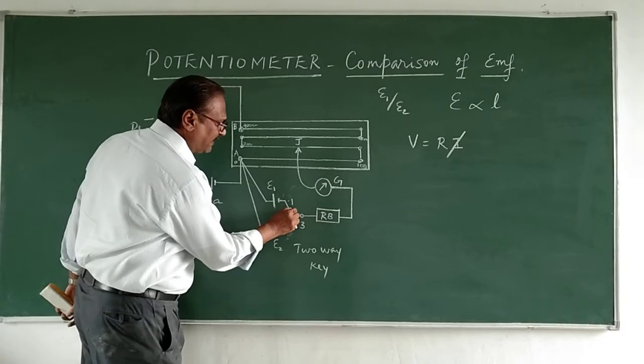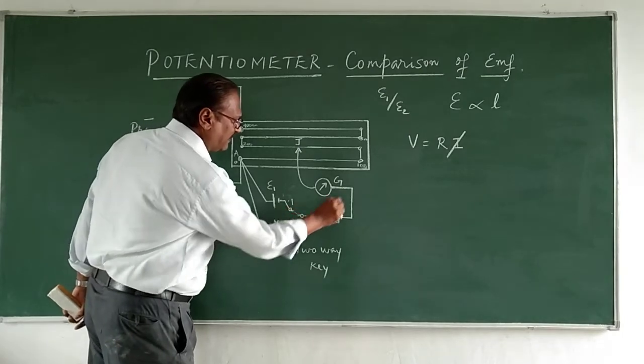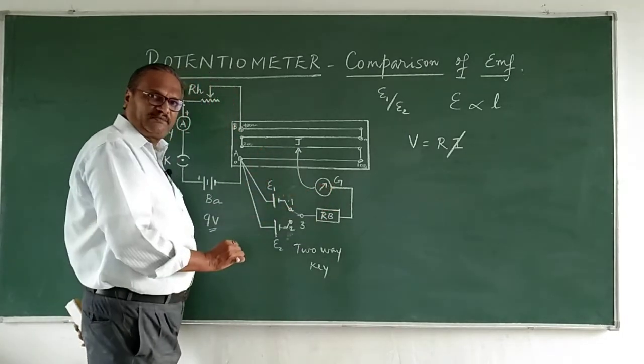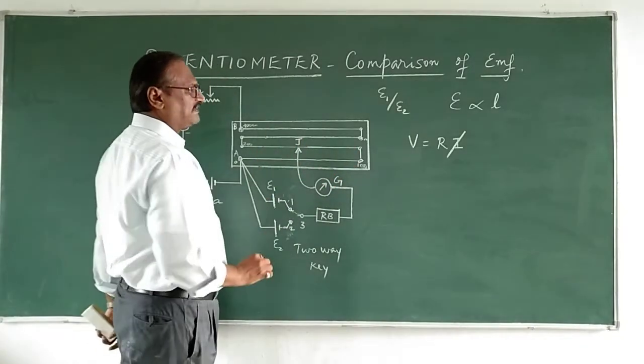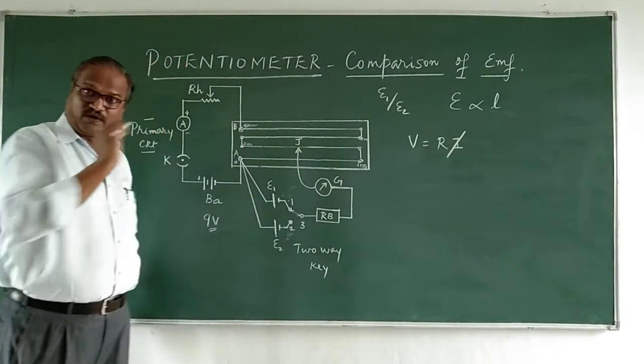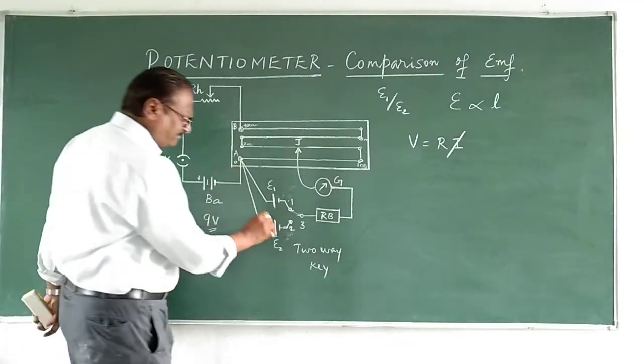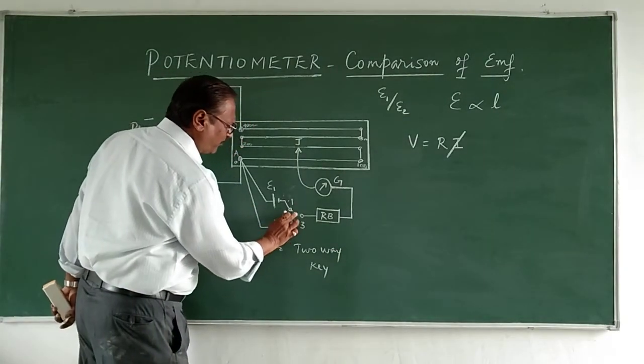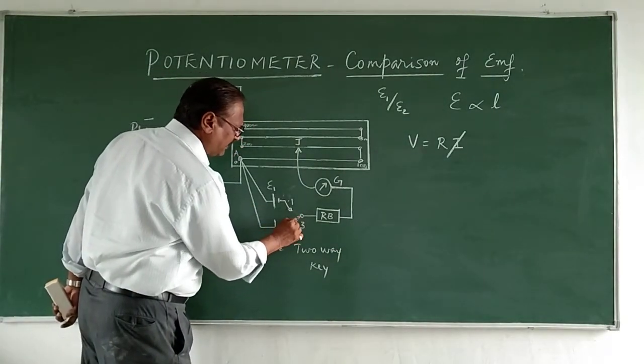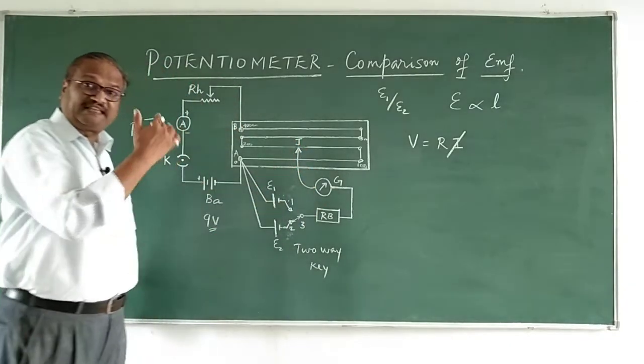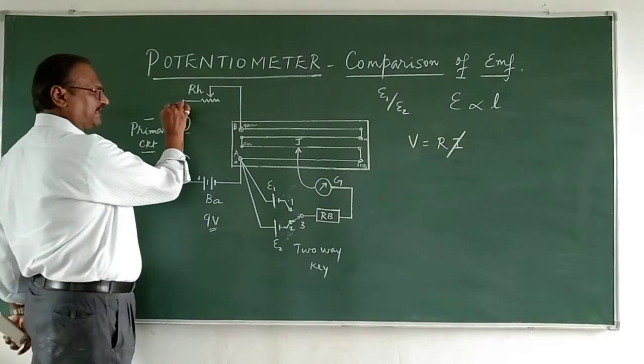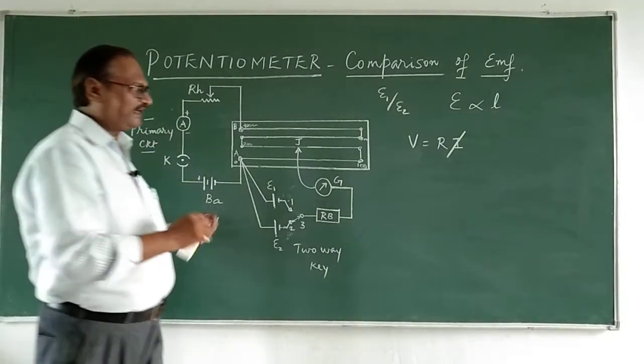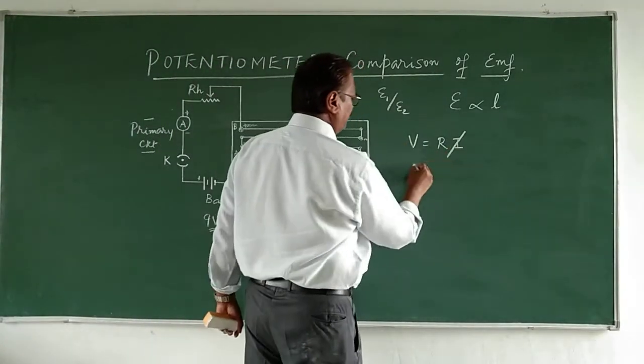I connect point 1 and 3 so that cell 1 will come into the circuit. When cell 1 comes into the circuit, current will flow through the galvanometer and I move it on this and find the balancing length, let's say L1. Then I connect point 2 and 3 together and find the balance length, that is L2, for the same current.